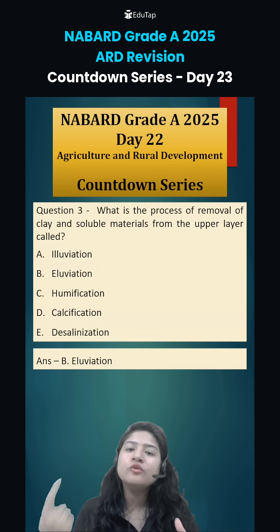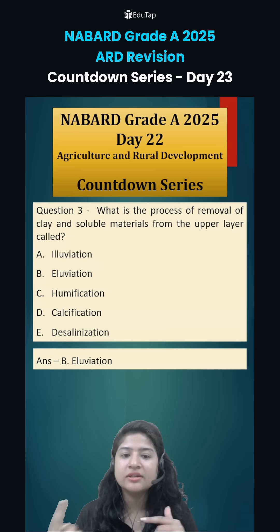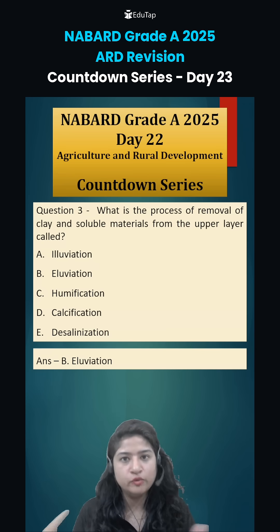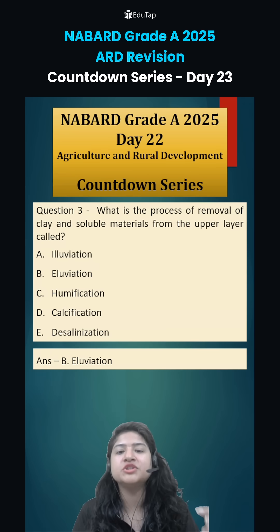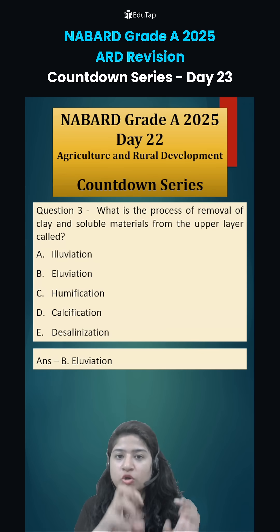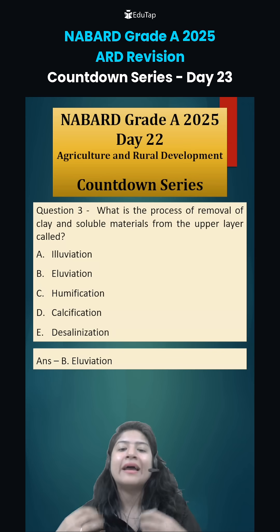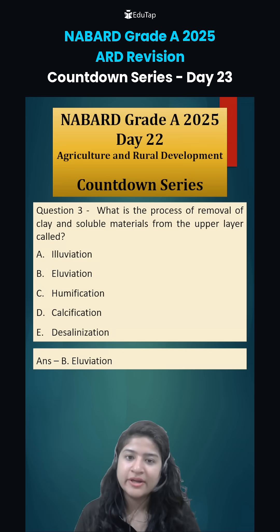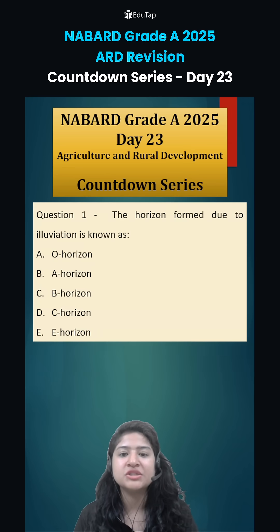Option number A: illuviation. So this is the difference between eluviation and illuviation. Eluviation is washing out and illuviation is washing in. So these were the questions.